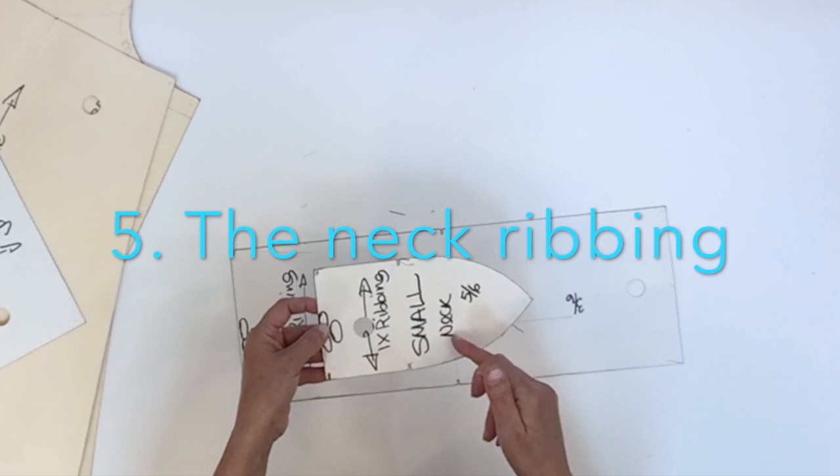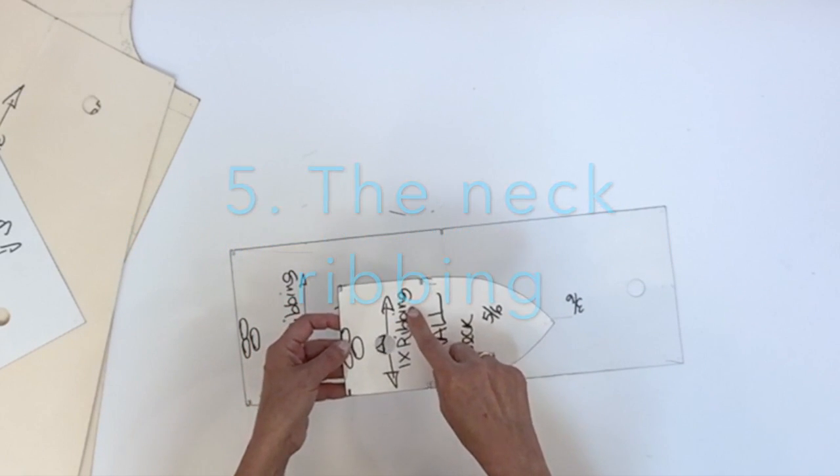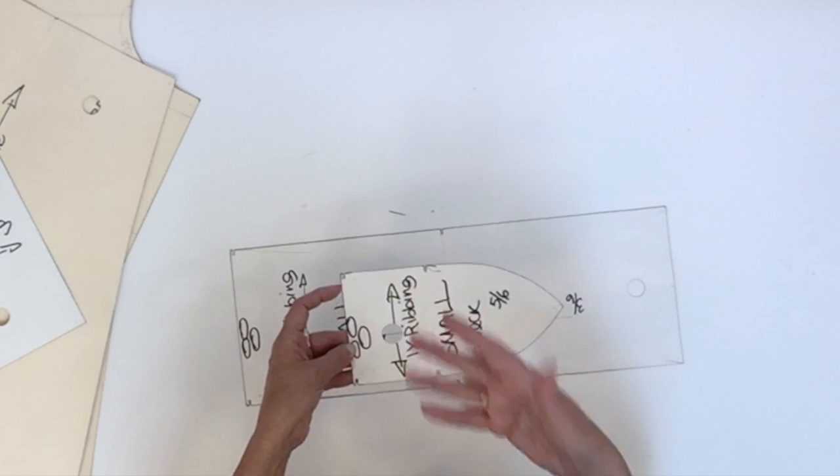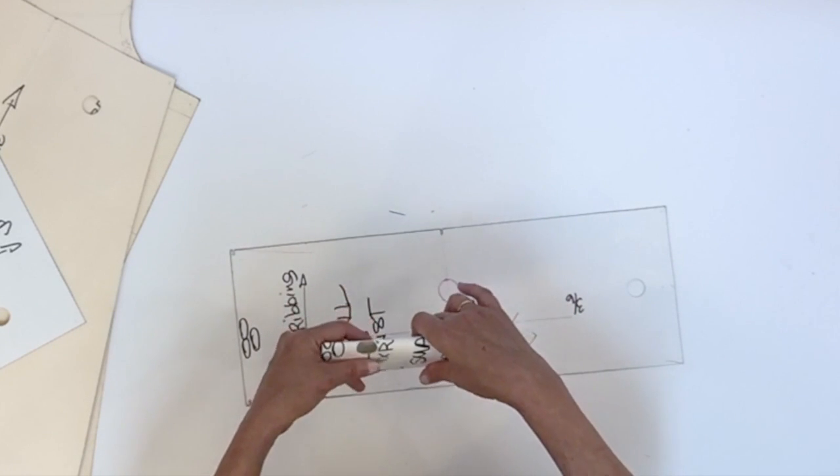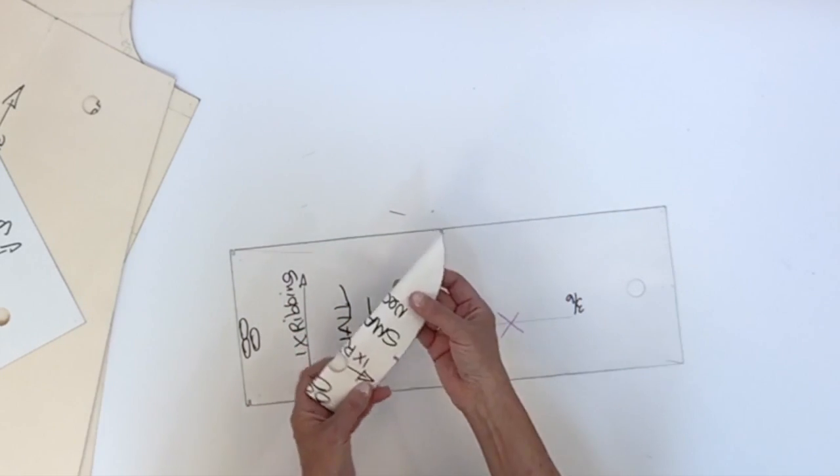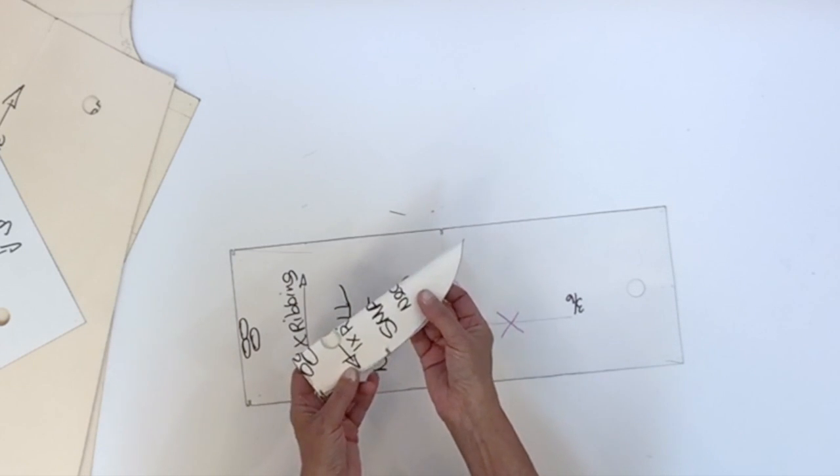The next piece is your neck piece, also cut in ribbing. This is half the collar. When it's folded like that, you can see a little bit more the shape of your collar.